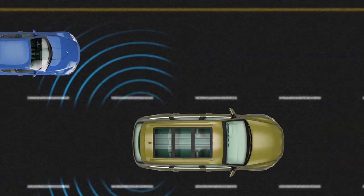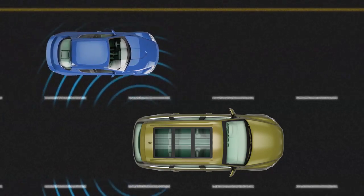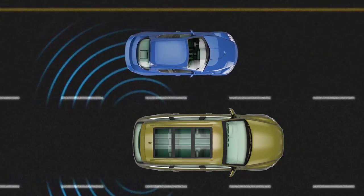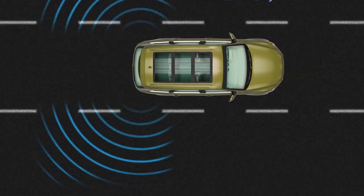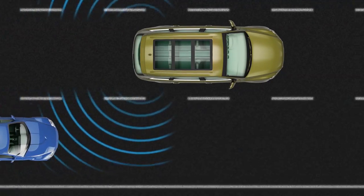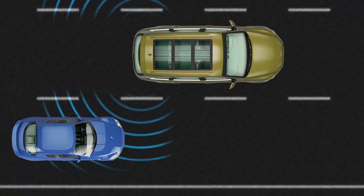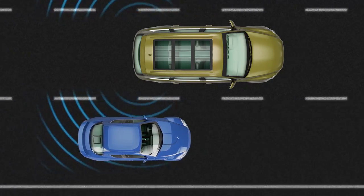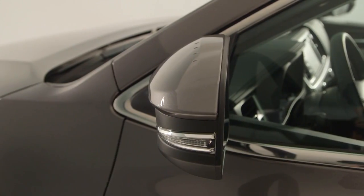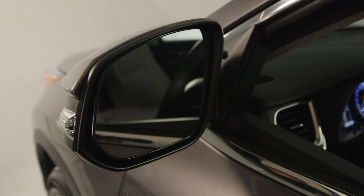The Blind Spot Monitor function detects vehicles traveling in the same direction in an adjacent lane that may be in the blind spot, not visible in the outside rearview mirror, and advises the driver of their existence. When a vehicle is detected in the blind spot area on either side of the vehicle, if the turn signal is not activated, an indicator light comes on in the outside mirror on that side.